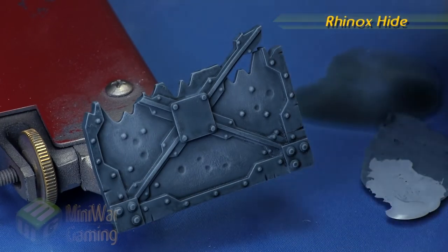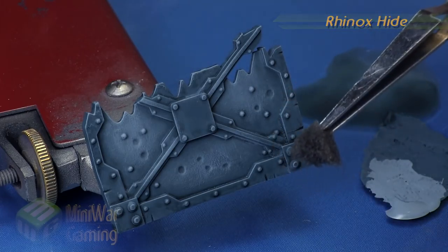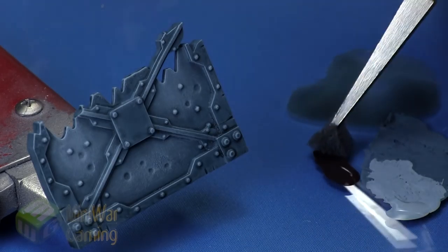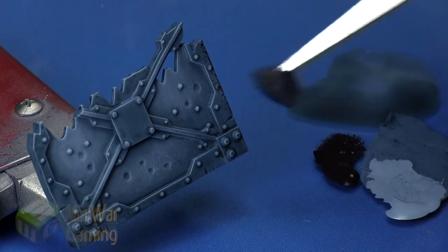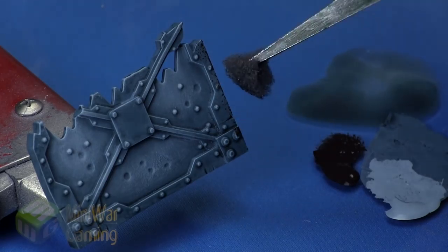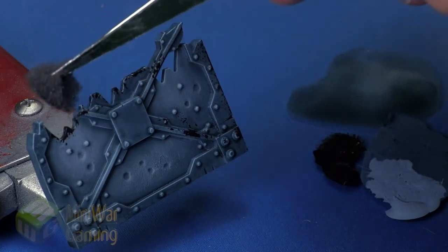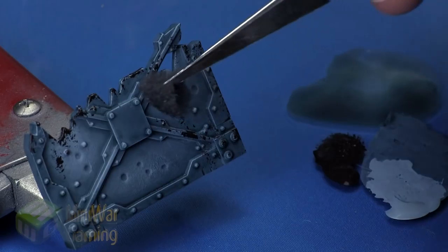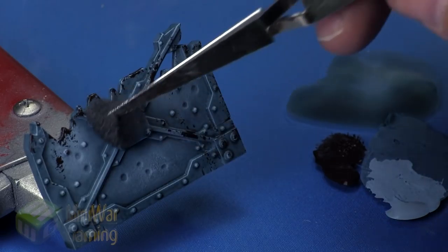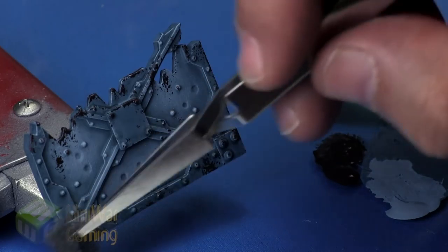Rhinox Hide is next and we're going to use some fine sponge. You typically find this in blister packs of miniatures or at the dollar store or big box stores in touch-up brushes. I have clamping action tweezers and I'm dipping into the Rhinox Hide and applying it to the model very carefully, keeping a very light hand.